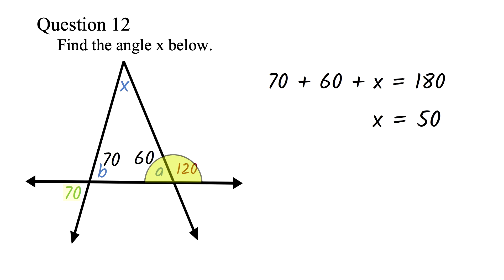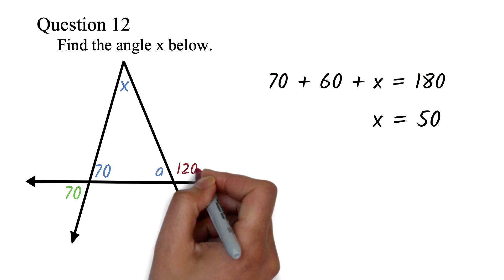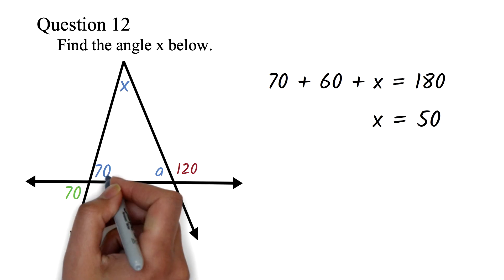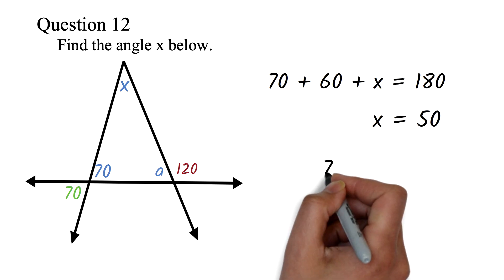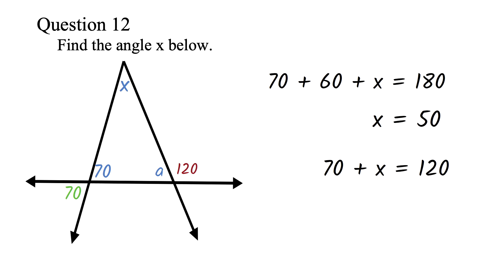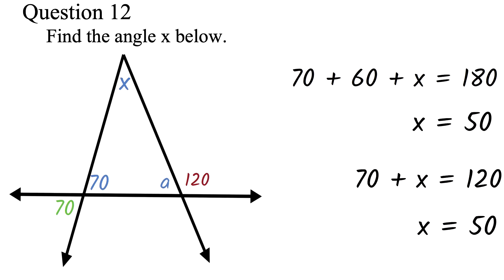Now we add all interior angles: 70 plus 60 plus x equals 180, giving x equals 50 degrees. There's another way — once we knew angle B is 70, we can use the exterior angle theorem: the exterior angle 120 equals the sum of the two opposite interior angles, x and 70. So 70 plus x equals 120, giving x equals 50 degrees. Notice we got the same answer.